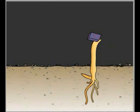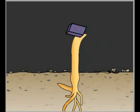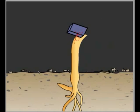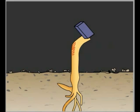When Wendt placed the agar block on one side of the decapitated shoot, the shoot curved away from the agar as it grew. This demonstrated that some kind of hormonal signal had diffused into the agar from the coleoptal tips, and had then diffused into the growing coleoptal. This hormone, subsequently called auxin, caused the growing plant to curve even in the absence of light. Wendt's experiment represented the first time that anyone had isolated a hormone from plants.